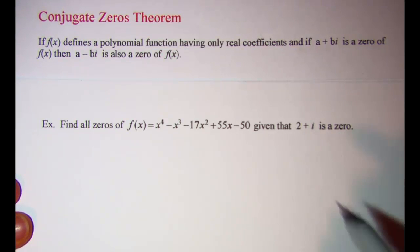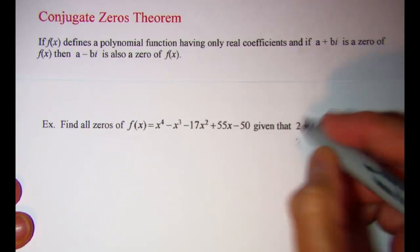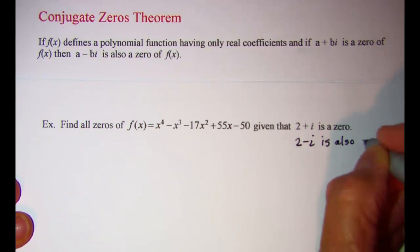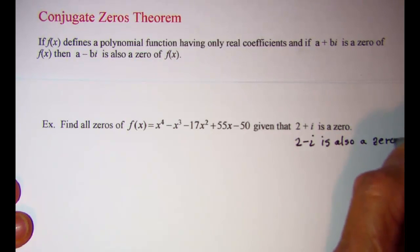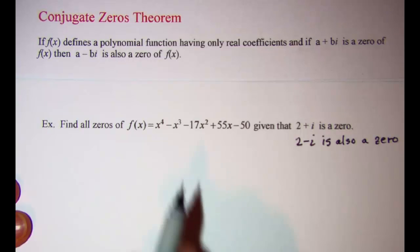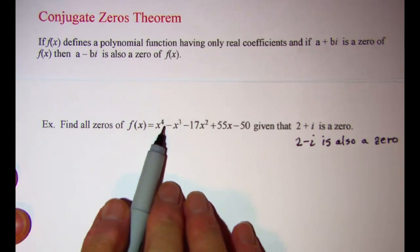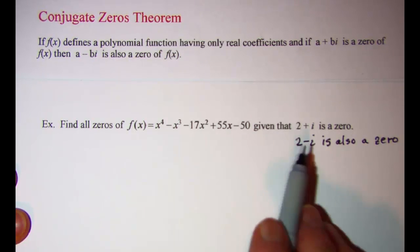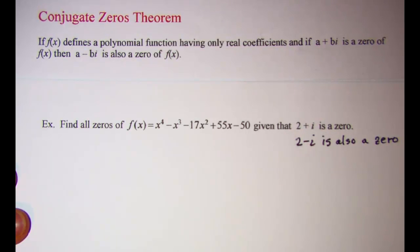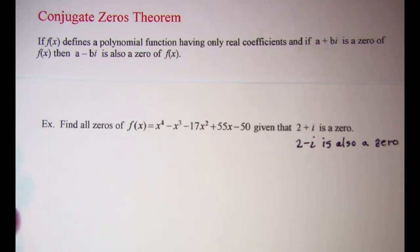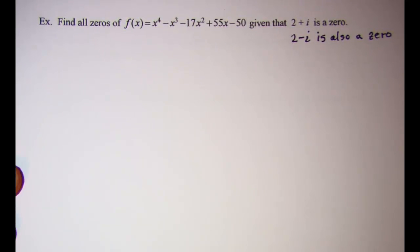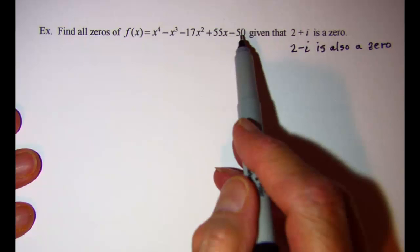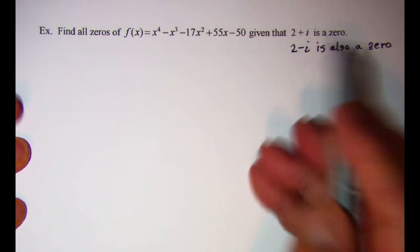By our conjugate zeros theorem, we also know that 2 - i is also a zero. Now we know that since this is a fourth degree polynomial, I'll have at most four zeros. I already have two of them, so I'm only going to have to find two zeros. To make our work easier, let's divide our function using synthetic division. We'll use 2 + i as our k value to start with.